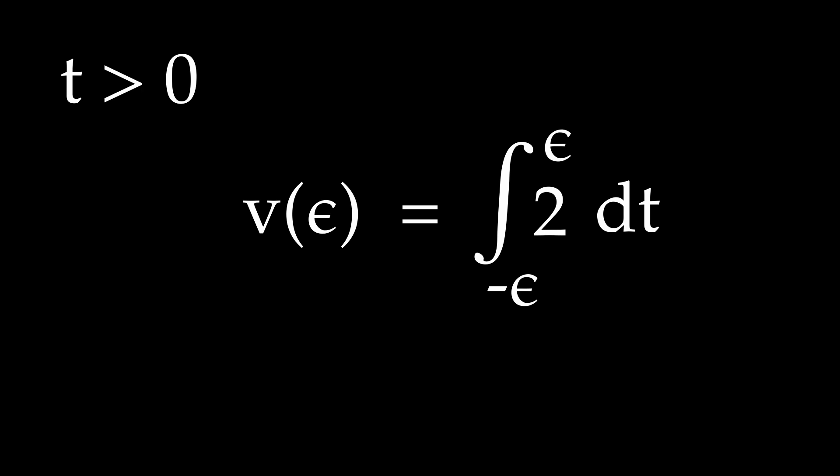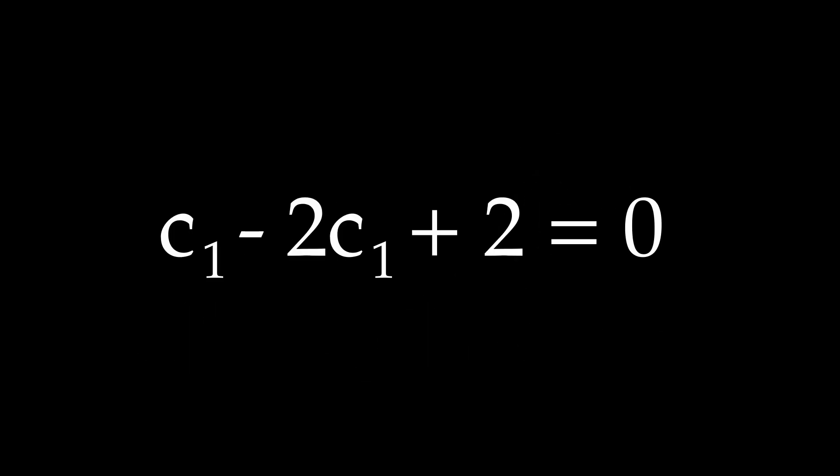this epsilon integral will turn that into 0 when epsilon is small. So we get that v of epsilon is 0. Getting our constants again, we find that c1 is 2.